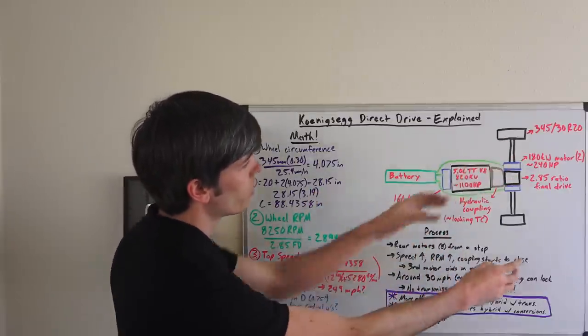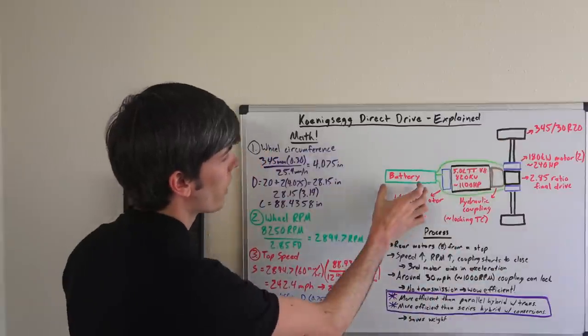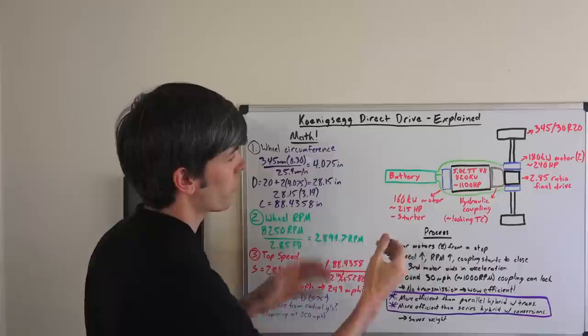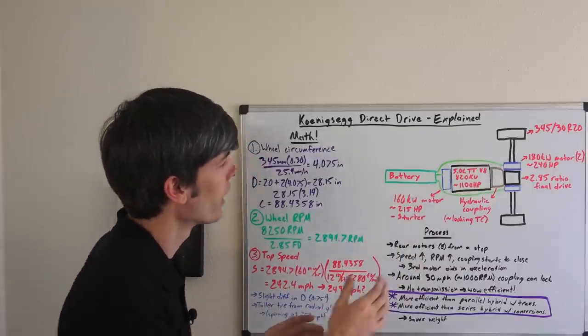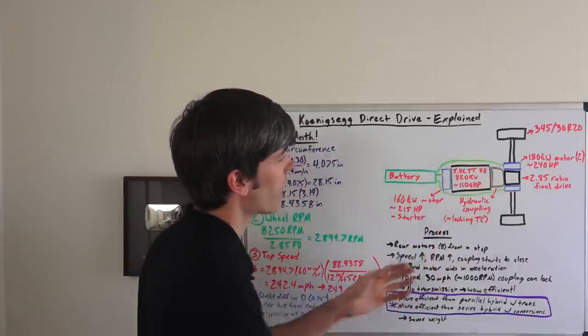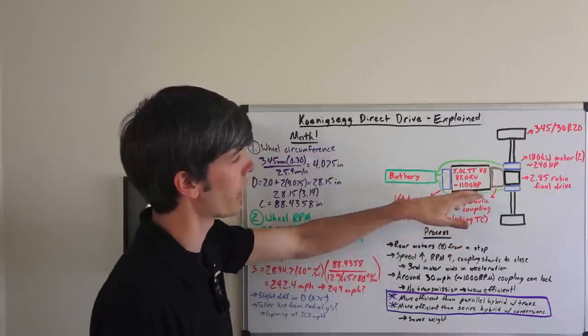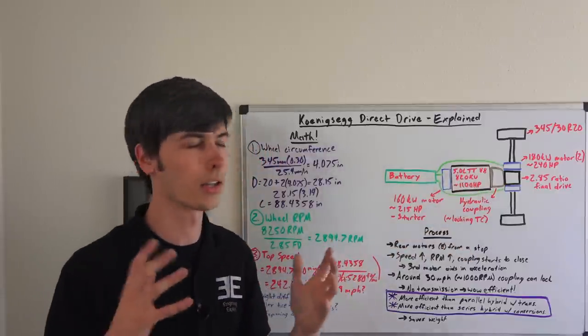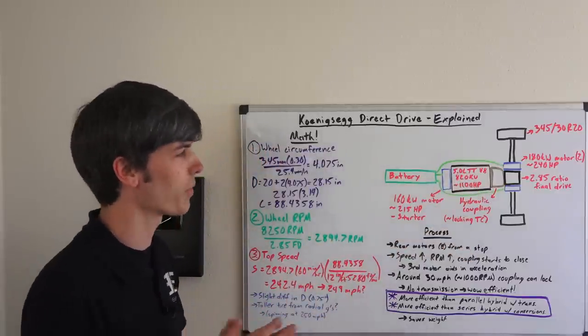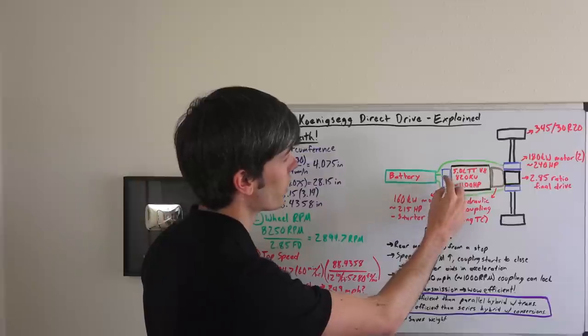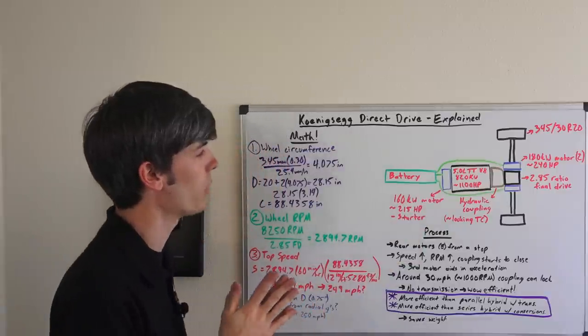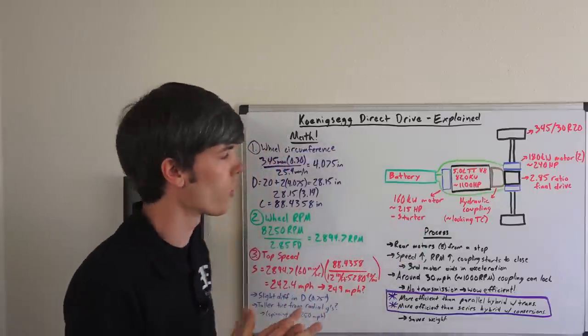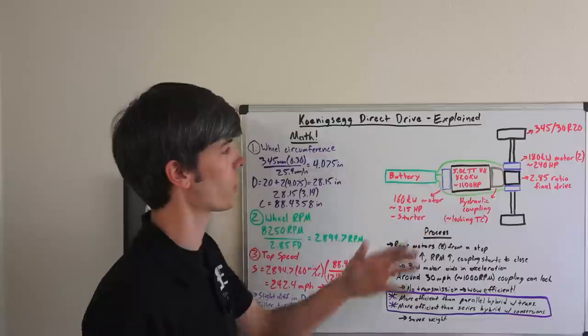So here we have the two rear wheels of the vehicle. You've got a battery which is placed kind of towards the front but in the center, probably between you and the passenger of the Koenigsegg. And then here you have a 5 liter twin turbo V8 producing 820 kilowatts or about 1100 horsepower, an insane amount of power. Now behind that engine, actually towards the front of the vehicle, you do have a 160 kilowatt motor or about 215 horsepower, and this is also the starter for the engine.